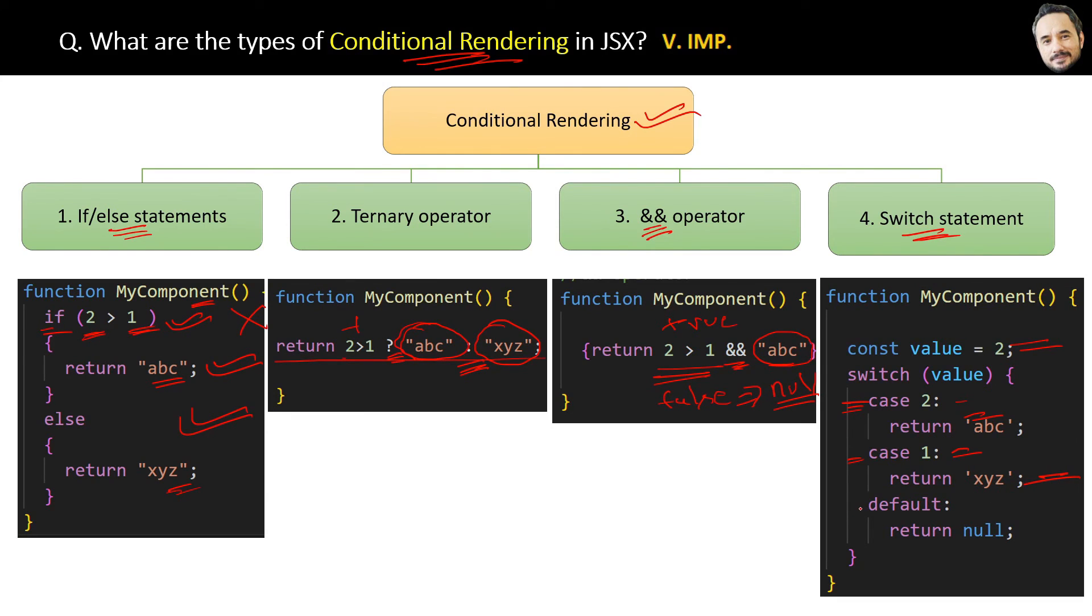And if none of the case statements are true, then default will be the one that runs. Great! These are all the types of conditional rendering available in JSX. Remember, when to use which type of conditional rendering depends on the complexity of conditions.